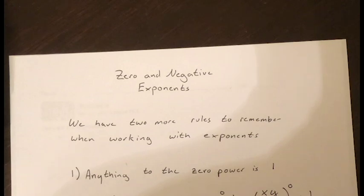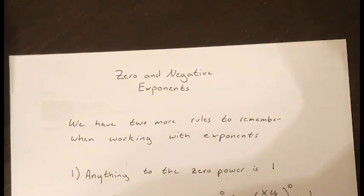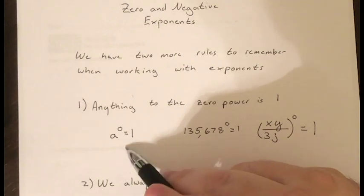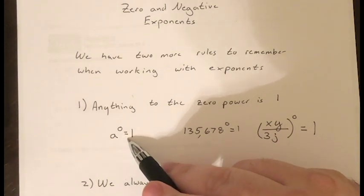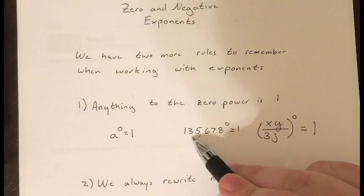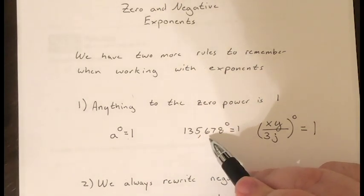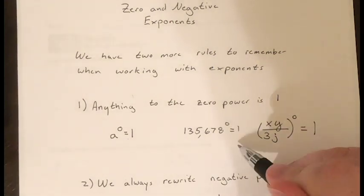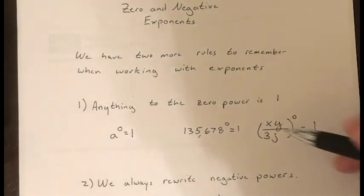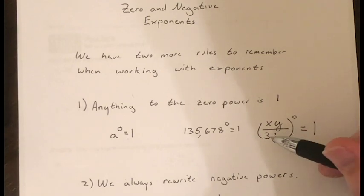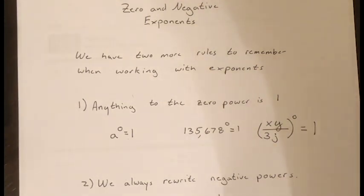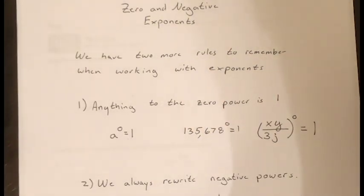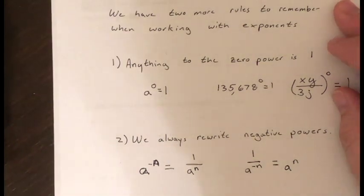In this video we're going to be talking about zero and negative exponents. We have about two more rules to remember when working with exponents. The first one is: anything to the zero power is one. For instance, a to the zero is one, 135,678 to the power of zero is also one.